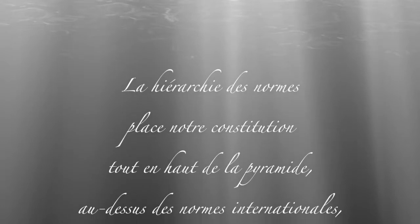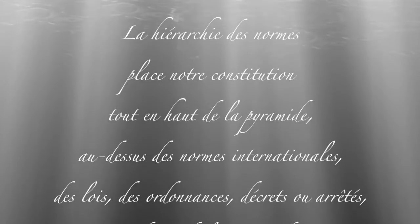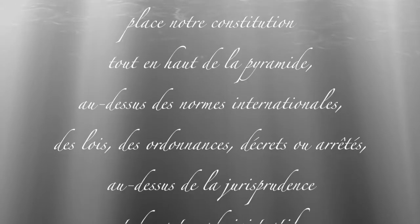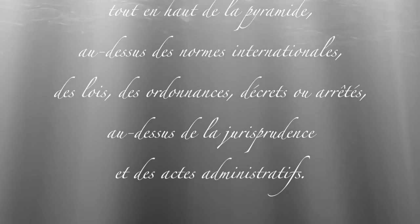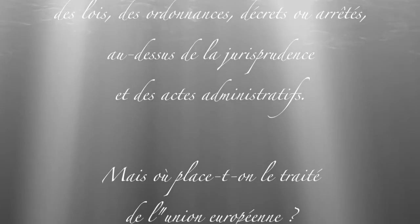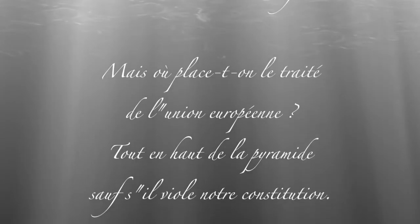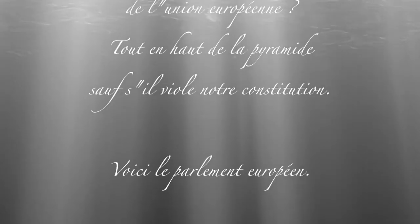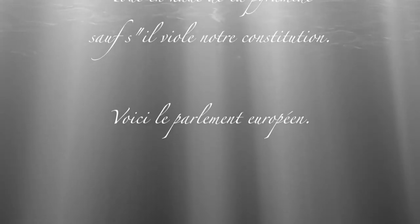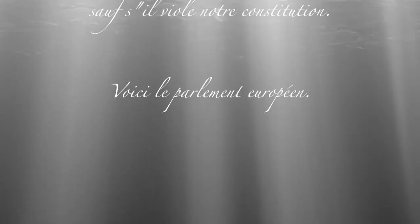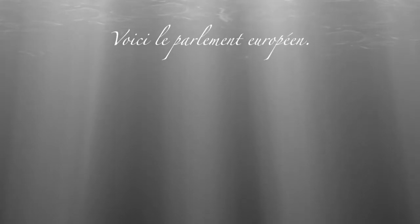La hiérarchie des normes place notre constitution tout en haut de la pyramide, au-dessus des normes internationales, des lois, des ordonnances, décrets ou arrêtés, au-dessus de la jurisprudence et des actes administratifs. Mais où place-t-on le traité de l'Union européenne ? Tout en haut de la pyramide, sauf s'il viole notre constitution. Voici le Parlement européen.